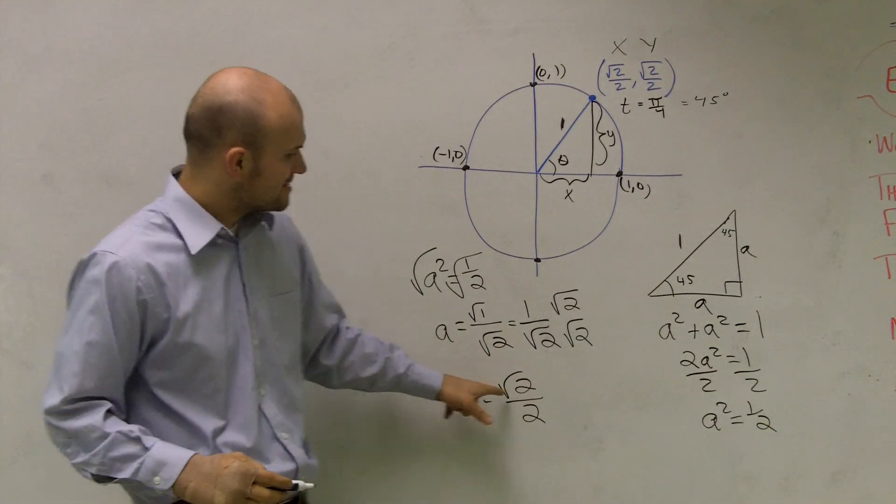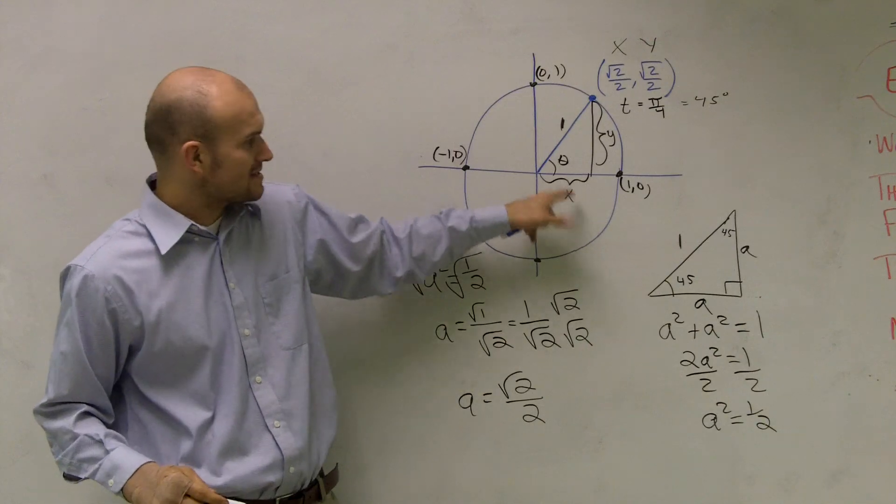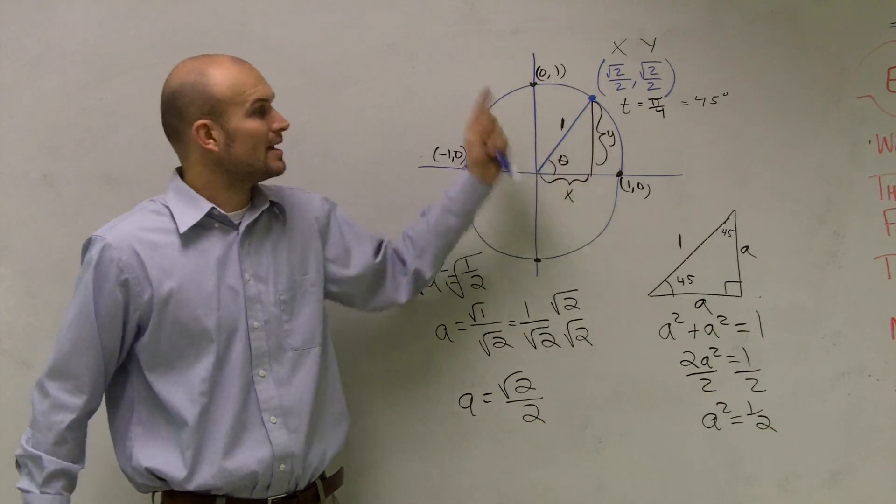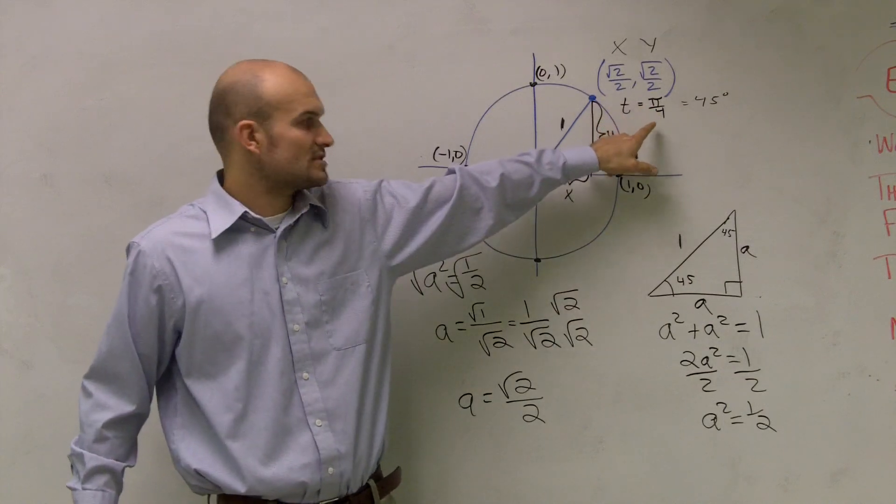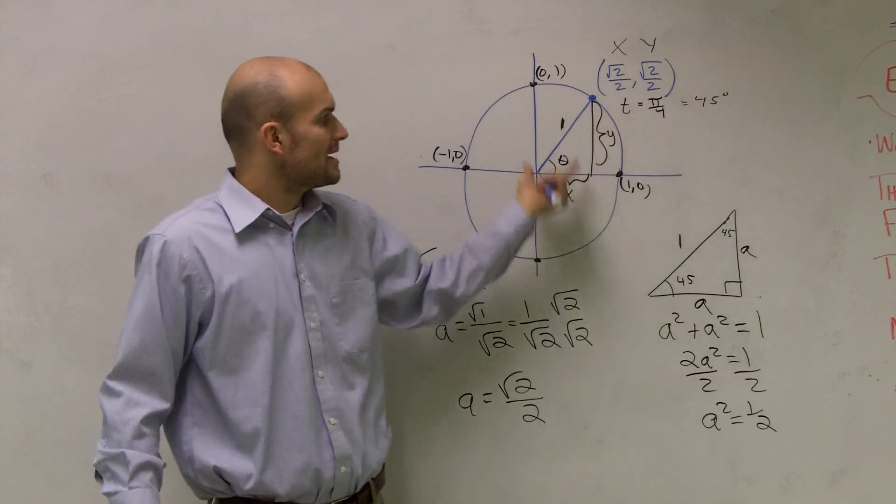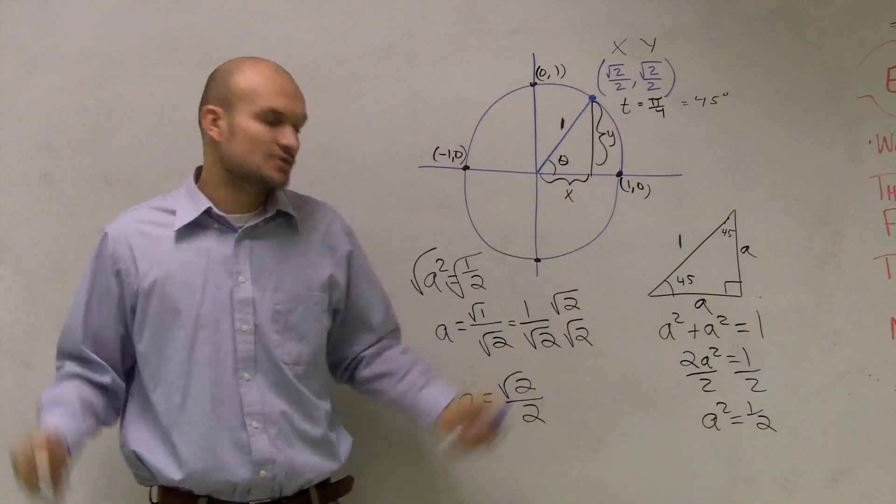What you notice is, see how A equals radical 2 over 2? Therefore, that's my length for x, and it's also my length for y. That is why the coordinate point when radians is pi over 4, or for 45 degrees, my two coordinate points are square root of 2 over 2 and square root of 2 over 2.